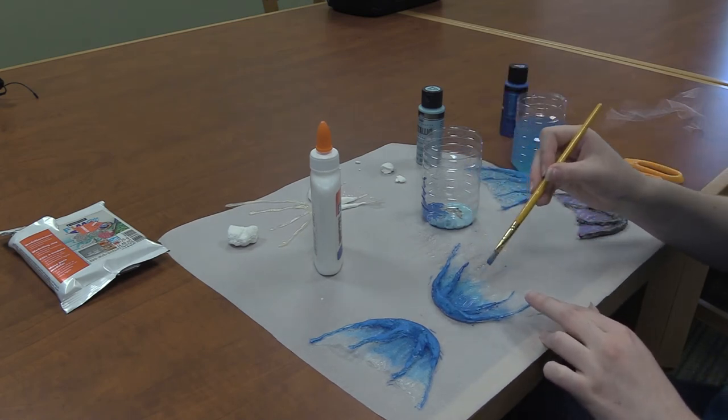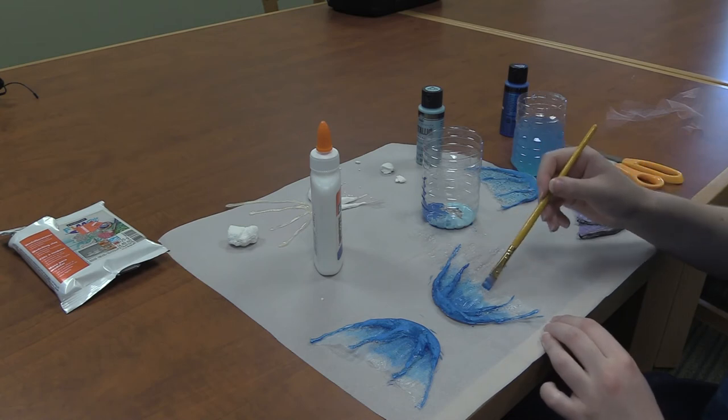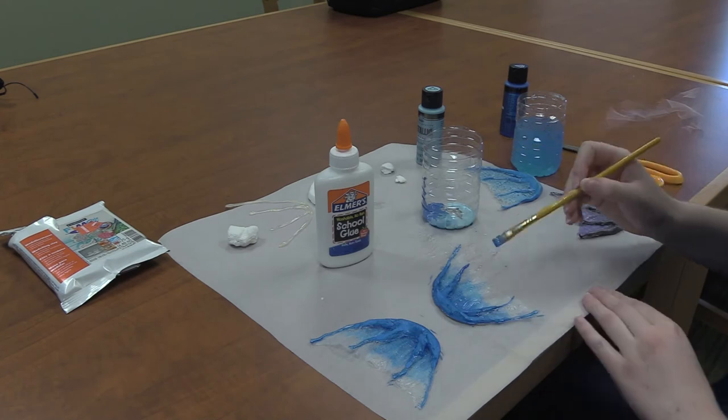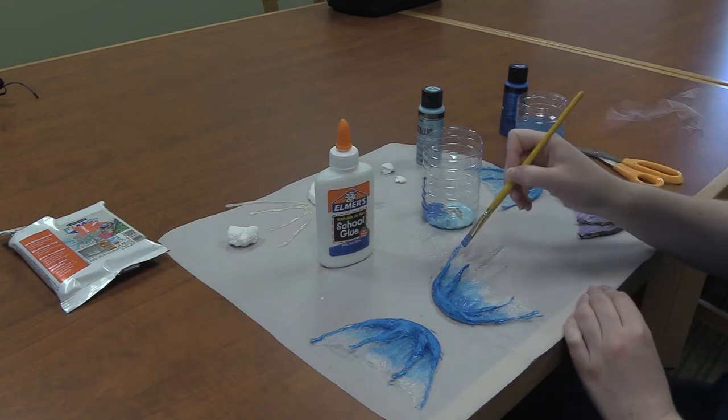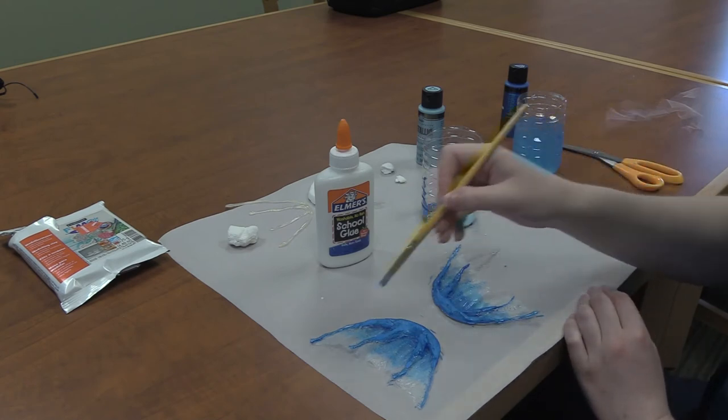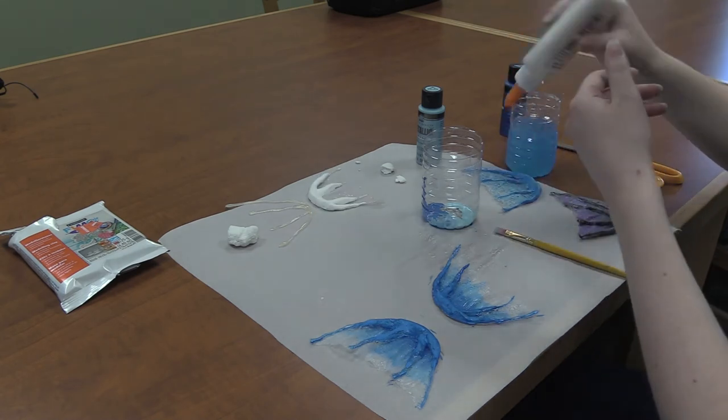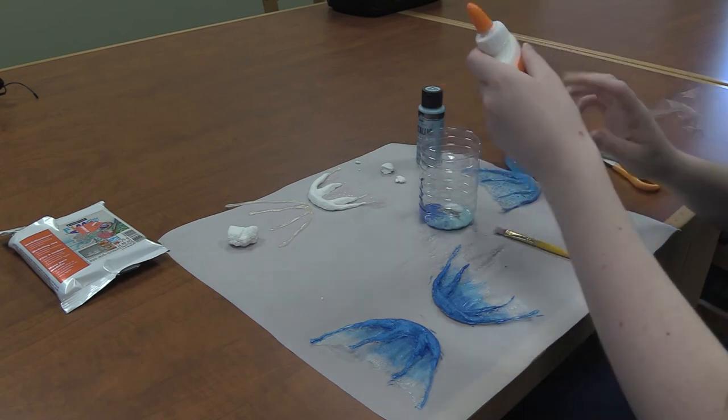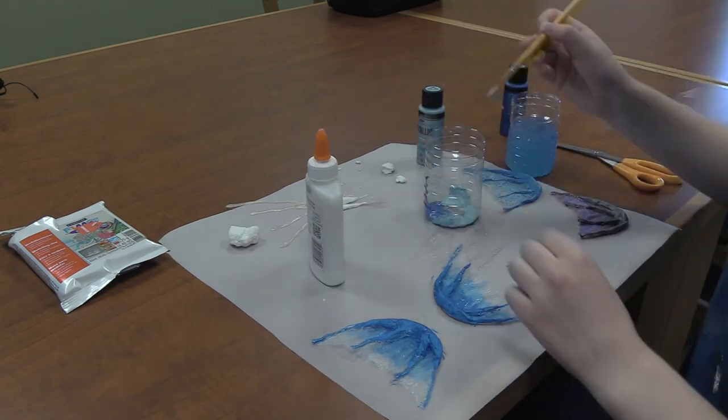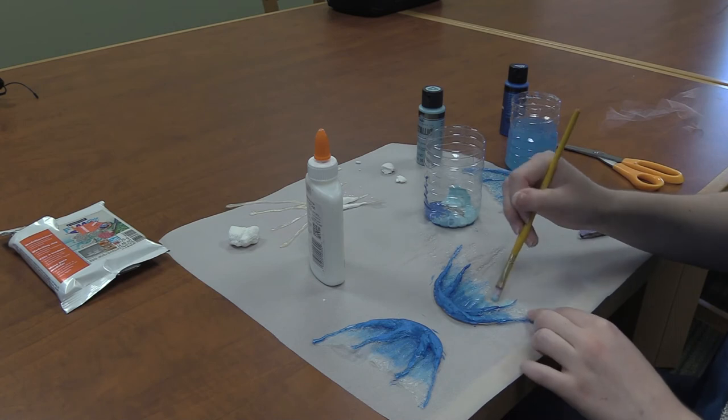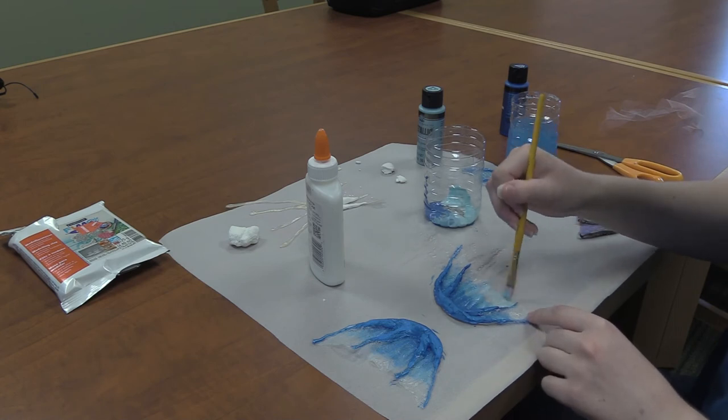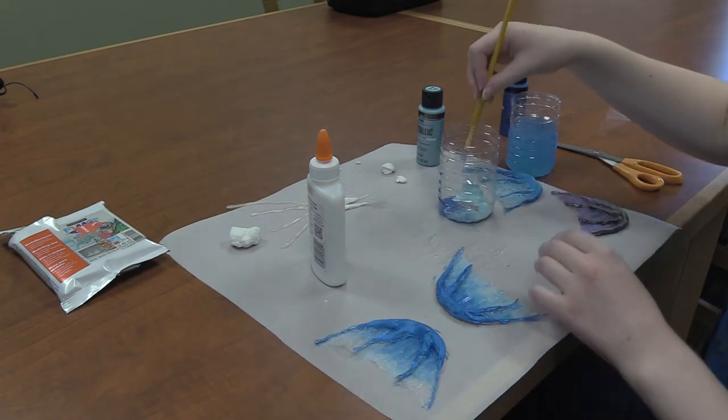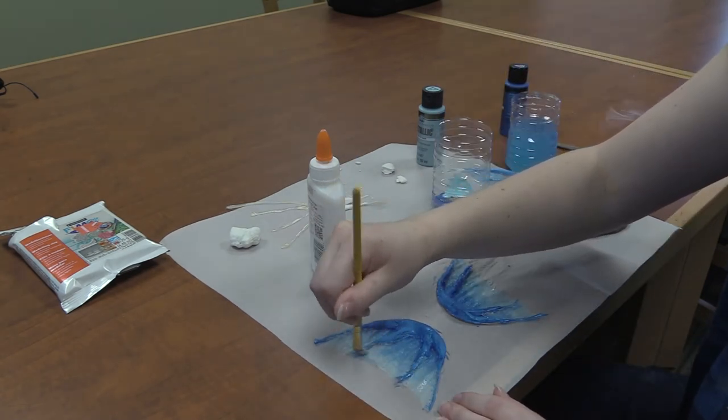Okay. Now I'm going to rinse my brush off again. And now we're going to use a little bit of light blue with the most amount of school glue. So we can have a really thin, transparent, turquoise color on the outer edges. So a lot of school glue, a little bit of color.